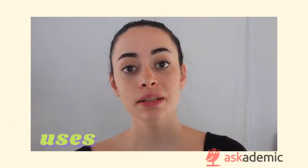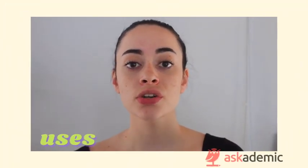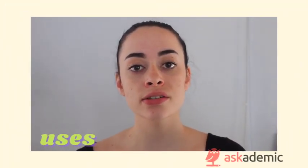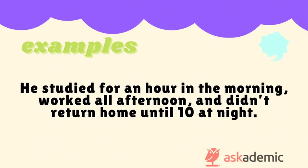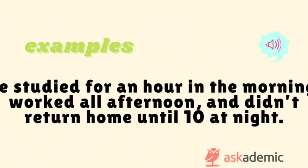The past simple is also used for a series of actions in the past. An example: he studied for an hour in the morning, worked all afternoon, and didn't return home until 10 at night.